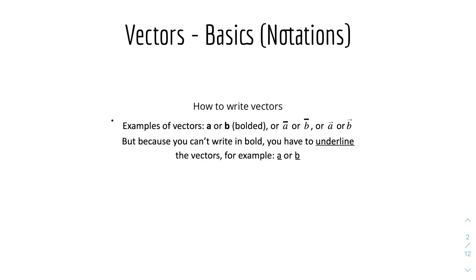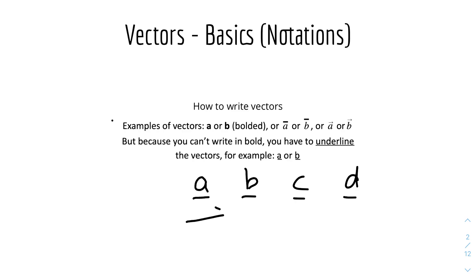So here's how to write vectors. Some examples of vectors that you can see on a textbook or any slide is bolded letters, like A or B in this case. But because it's very difficult to write in bold on paper, we usually underline the vectors. So for A, we can write it with an underline, or B, C, D, so on. But if it's from one point to another, like A to C, we write it like this with an arrow — A to C, or O to A, where O stands for origin.